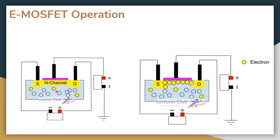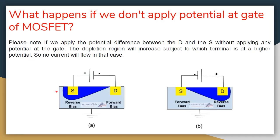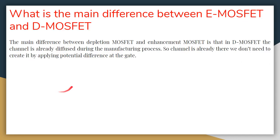What is the main difference between an E-MOSFET and a D-MOSFET? In an E-MOSFET we create a channel by applying a positive potential at the gate. But in a D-MOSFET, the channel has already been diffused during the manufacturing process, so we do not need to create a channel.